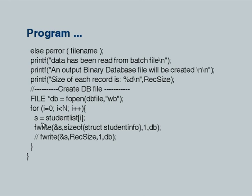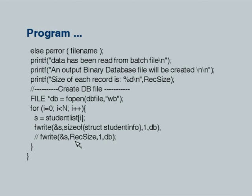For i equal to 0 to n minus 1, s is assigned student_list[i] — when we took data for one student we stored the value of s into student_list[i], so now all 6 students' data is there. We write each record using: 'fwrite(&s, sizeof(struct student_info), 1, db)'. fwrite specifies what is to be written by passing the pointer to the structure, which holds the data of each student in turn. We write only one element at a time, with the byte size equal to sizeof(struct). Equivalently, we could write 'fwrite(&s, rec_size, 1, db)' using the pre-calculated rec_size.